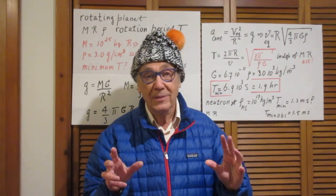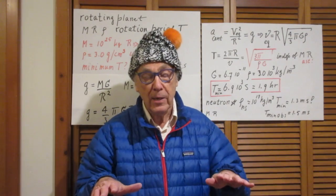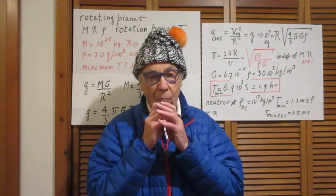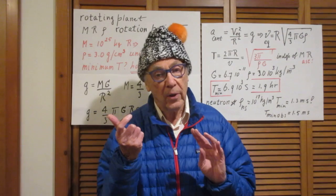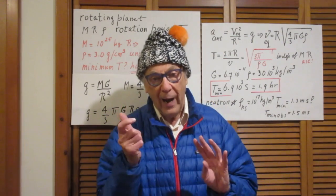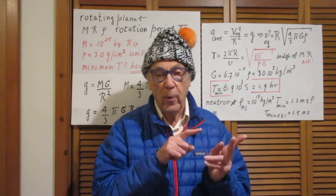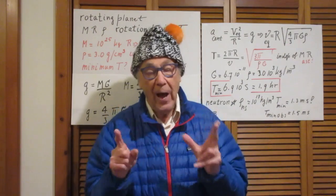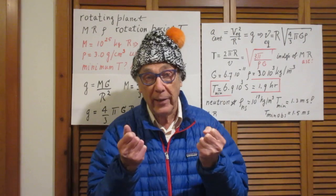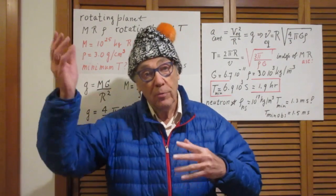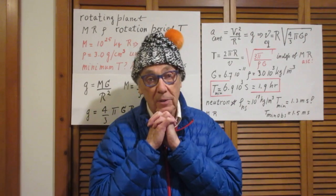I'm going to discuss with you a rather trivial solution with a fantastic result. What limits the minimum rotation period that a planet can have? If the rotation frequency is so high that the gravitational acceleration at the equator is not high enough to provide the needed centripetal acceleration at the equator, then matter will flow outwards from the equator, and thus the planet is no longer stable.